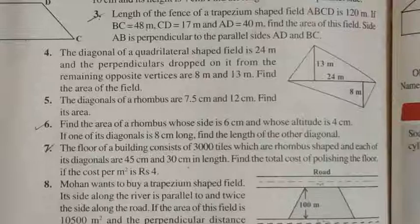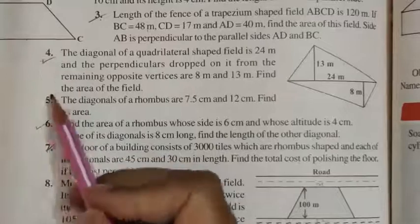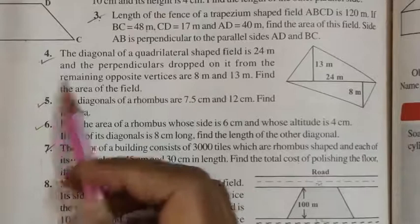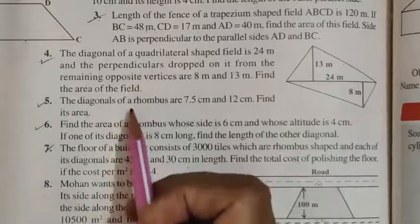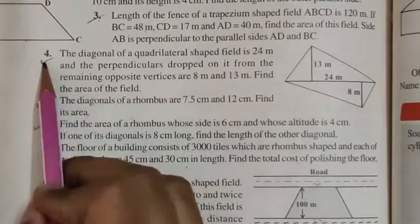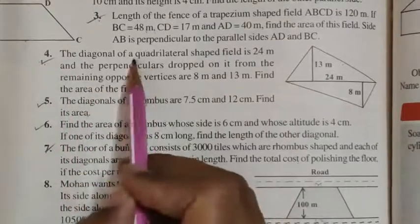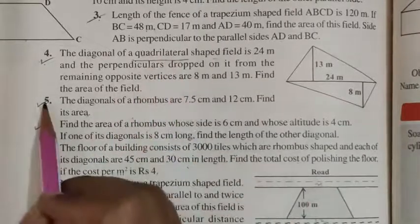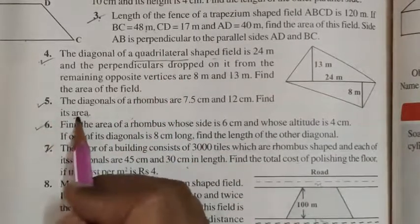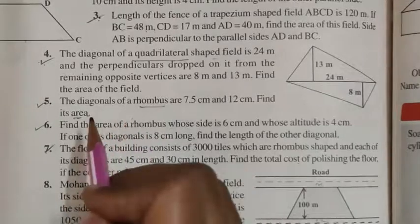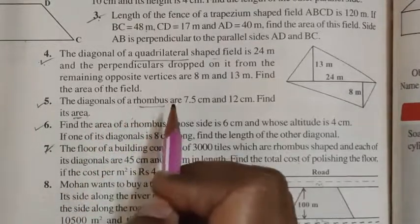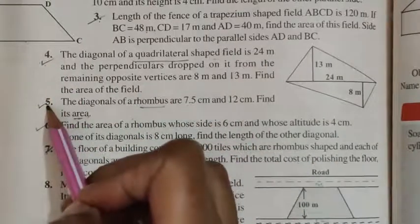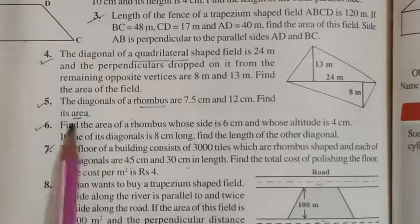Questions number 4 and 5 we are going to do by yourself. Both questions are completely based on formulas. In question number 4 we have to find the area of a quadrilateral field, so you are going to use the area of quadrilateral formula. In question number 5 we have to find the area of a rhombus, so use the area of rhombus formula, which is half × d1 × d2. Now let us see how we are going to do question number 6.